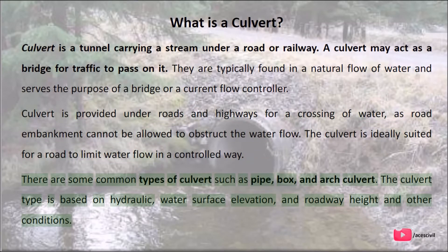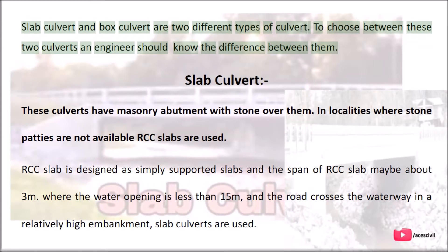There are some common types of culverts such as pipe, box, and arch culvert. The culvert type is based on hydraulic conditions, water surface elevation, and roadway height. Slab culvert and box culvert are two different types of culvert. To choose between these two culverts, an engineer should know the difference between them.